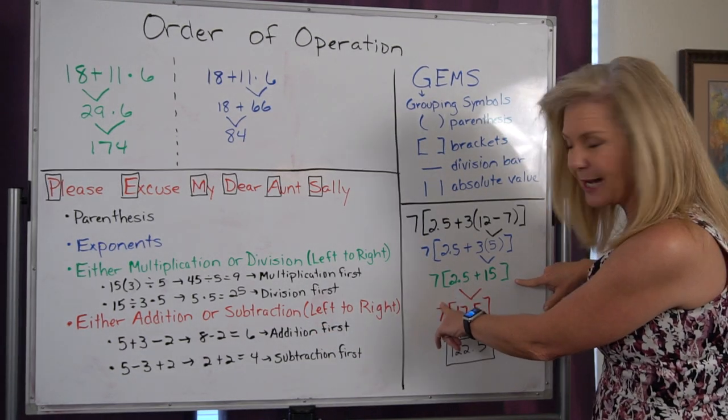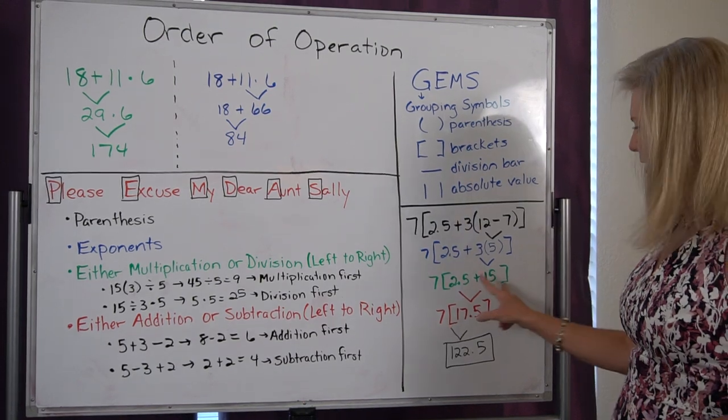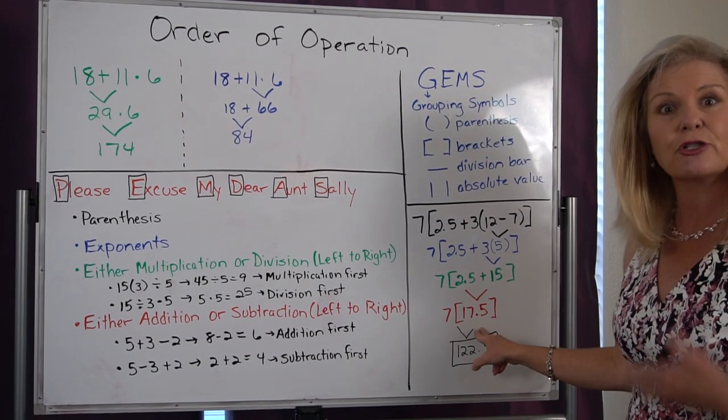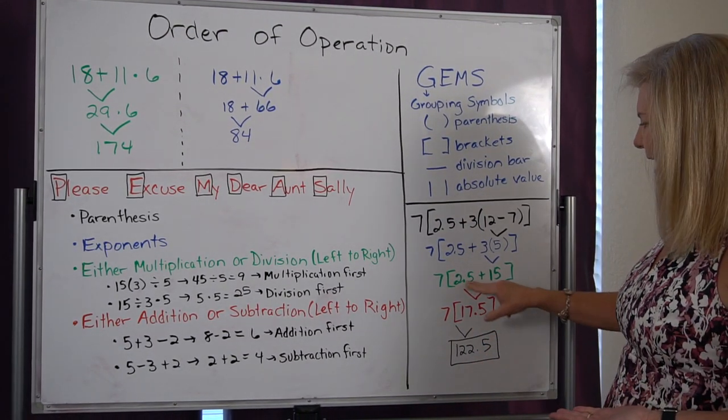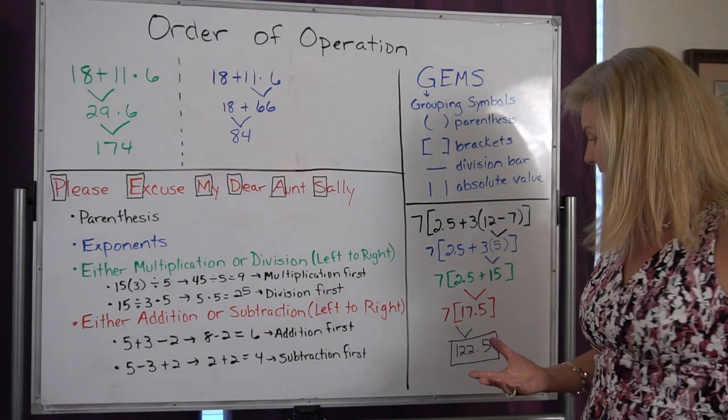I'm still inside my brackets, but now I just have my addition. So I'm going to use my arrow to point down to show what I'm solving. And when I add these two, I get 17.5.